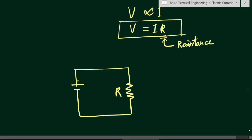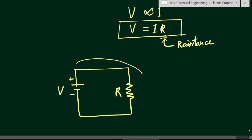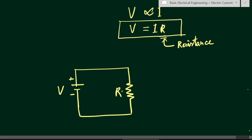We have an applied voltage with a positive terminal and a negative terminal. When we close this loop, current will flow depending on the voltage, and the amount of current will depend on the resistance. The resistance denotes the opposition to the flow of electrons. Electrons flow from the negative terminal to the positive terminal, and by convention, the flow of current is assumed in the opposite direction to the electrons.